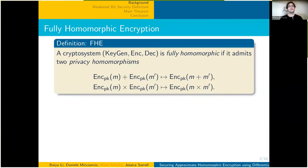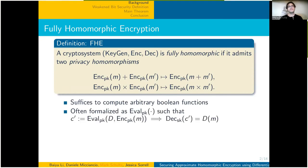The talk concerns fully homomorphic encryption. A cryptosystem is said to be fully homomorphic if it admits two privacy homomorphisms, or ways of combining encryptions of n and m into encryptions of their sum and their product. This suffices to compute arbitrary boolean functions. It's often formalized as an evaluation algorithm such that on input a circuit d and an encryption of a message m, one obtains a ciphertext c' that decrypts to d of m.